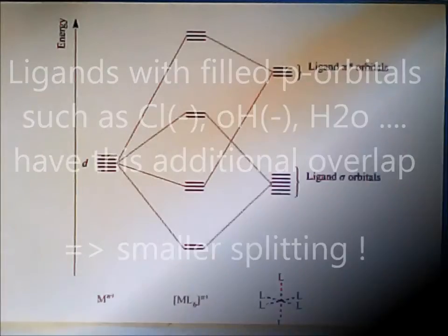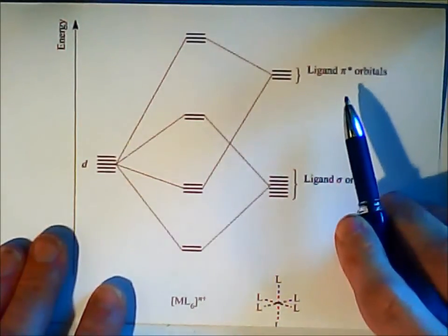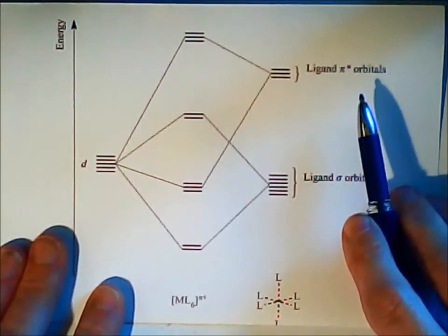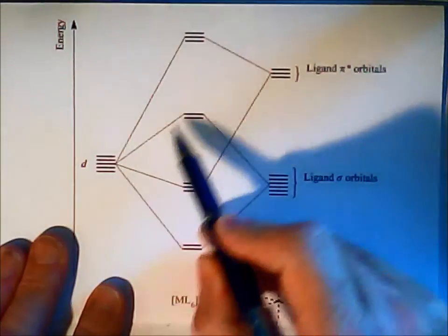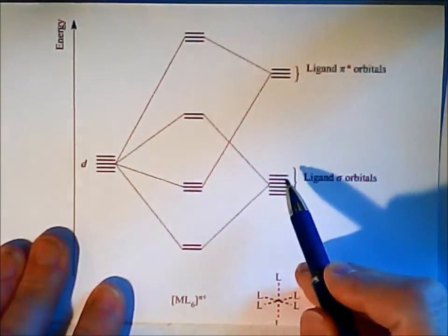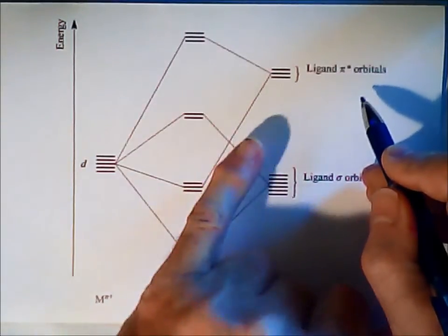Now finally there is another case where the ligands could have so-called π* anti-bonding orbitals. We have our usual interaction with the three d levels and the group orbitals. And now π*, what does this mean? A typical example would be carbon monoxide.